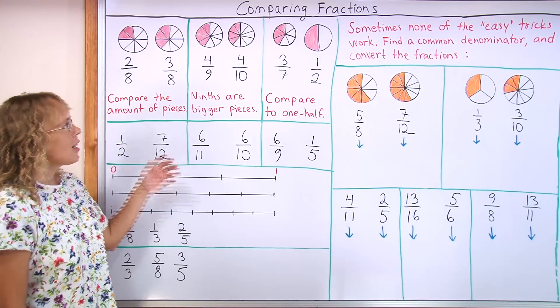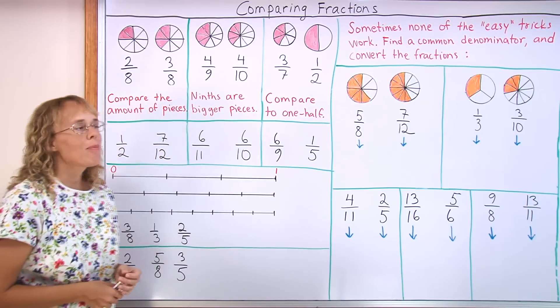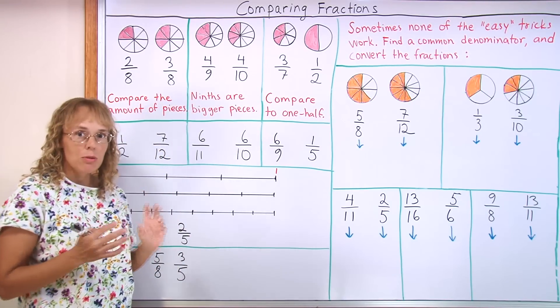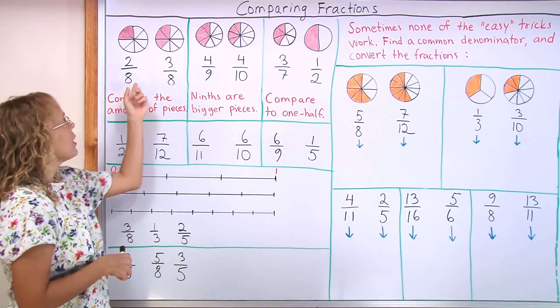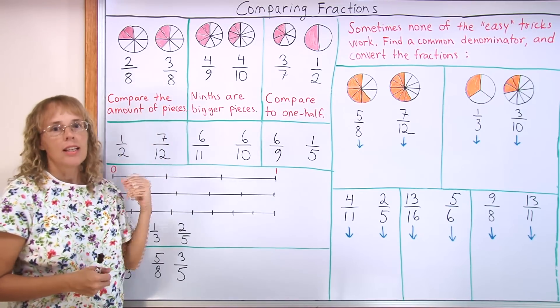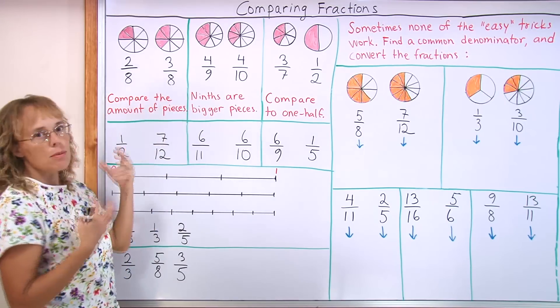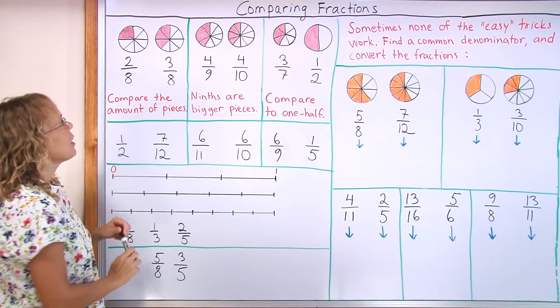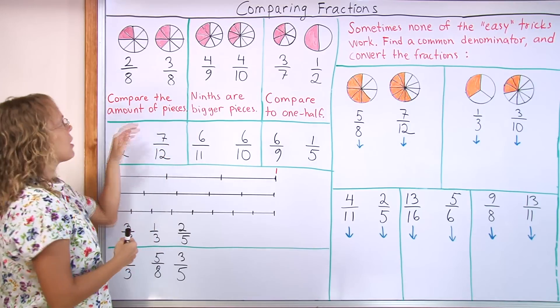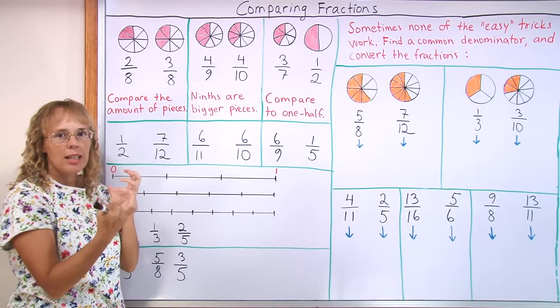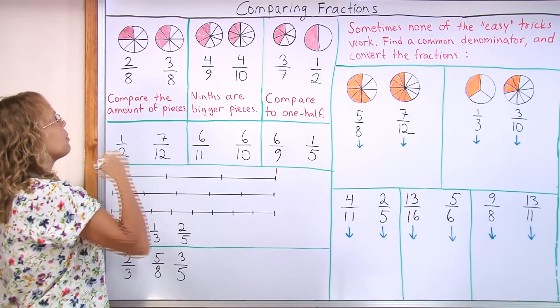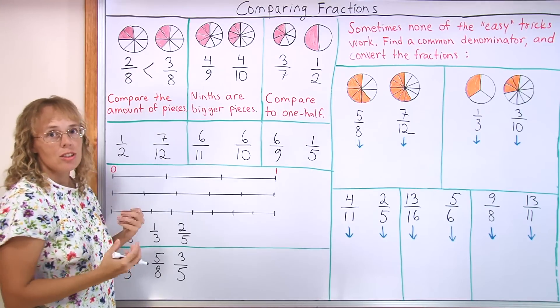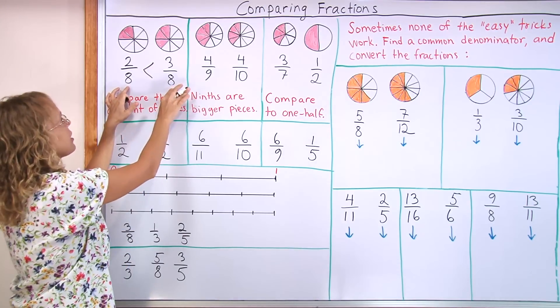First I have here some easy cases where you can easily compare the two fractions and find out which one is bigger or more. For example, if we have 2/8 and 3/8, obviously 3/8 is more. You can see it in the picture, plus you can see that there's more of the pieces. All you have to remember is that if there are eighths and eighths, it's like the same size pieces, all you do is compare how many pieces there are. So comparing like fractions, the fractions with the same kind of pieces, is easy.